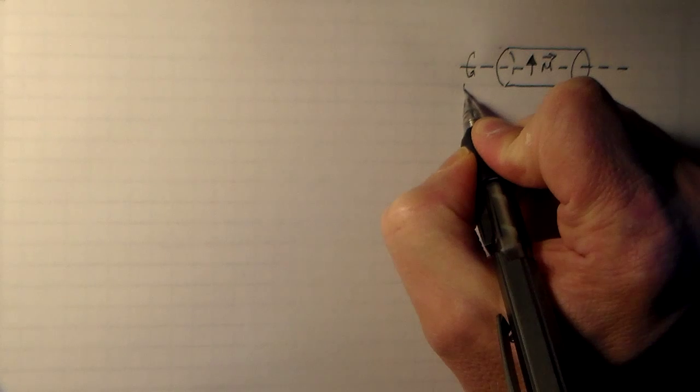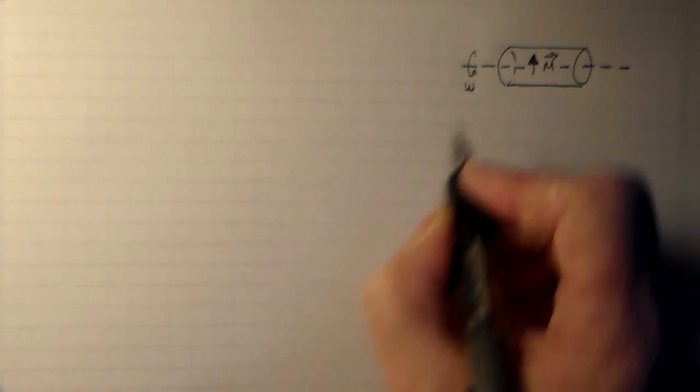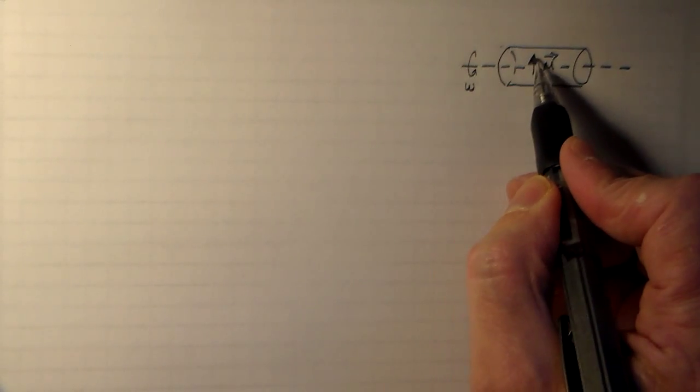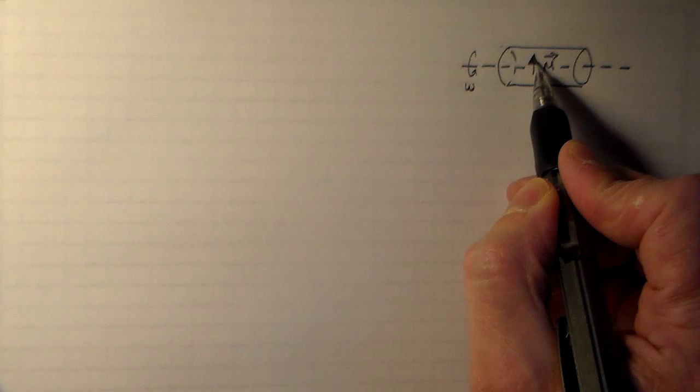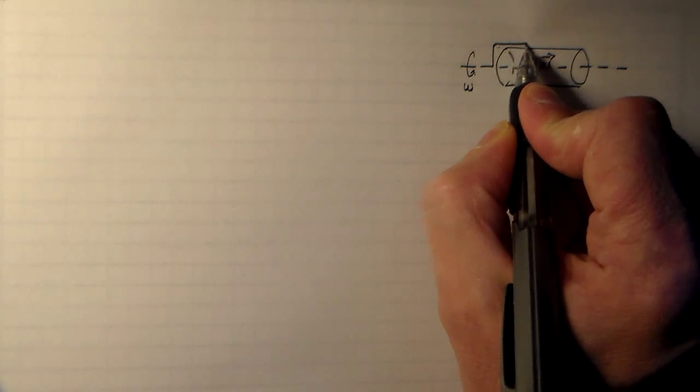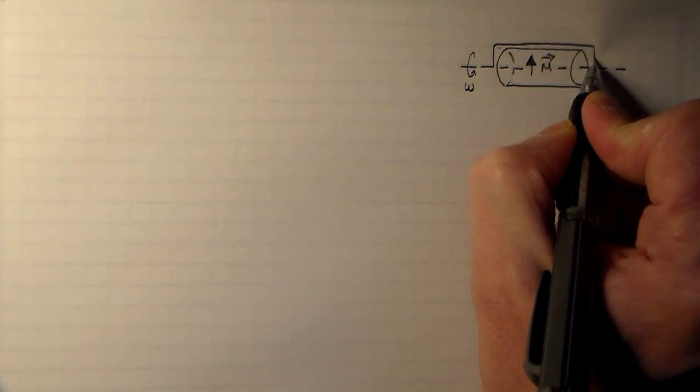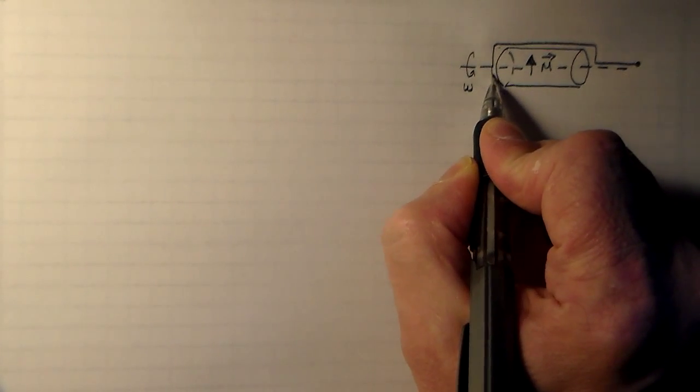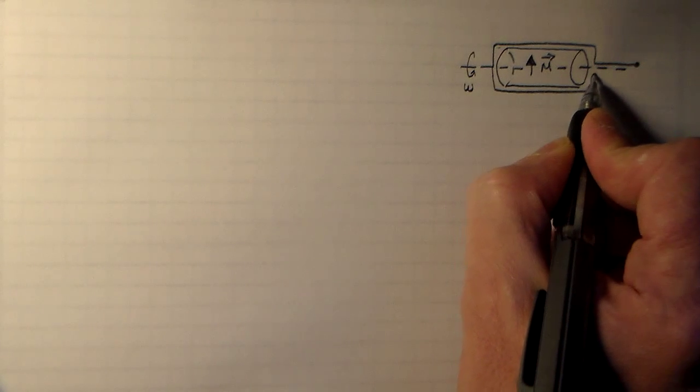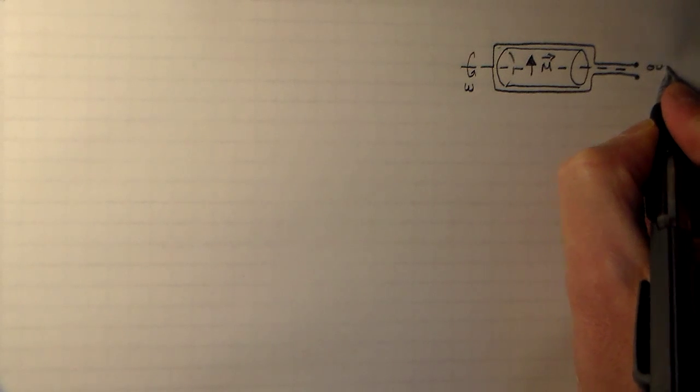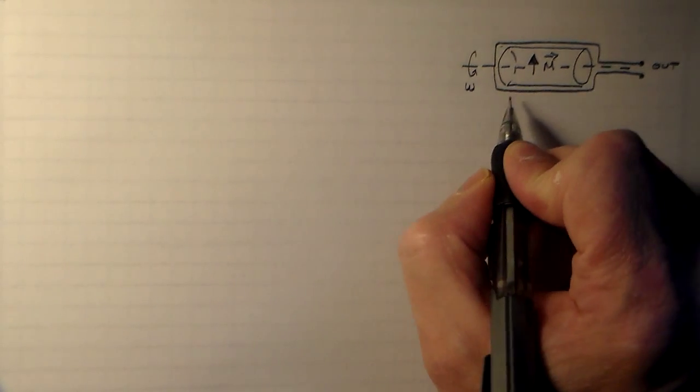Then this is going to rotate around here with an angular speed of omega. And to turn this magnetization, this rotating magnet into some sort of useful current, we're going to put a square or rectangular wire loop around here, coming along like this.